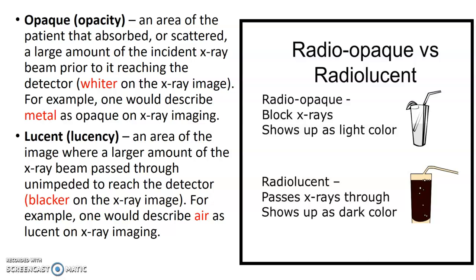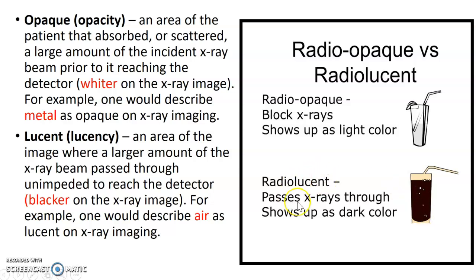A review of opaque versus lucent, or radiopaque versus radiolucent. Opaque refers to areas that absorb or scatter x-rays — they appear as whiter areas. Opaque actually blocks x-rays and shows up as a light color; for example, a hip replacement shows up white. Lucent or lucency means passing through, and shows up as a dark color. What's dark on your x-ray? Air — air passes through. Make sure you review those and make yourself a flashcard for radiopaque and radiolucent.